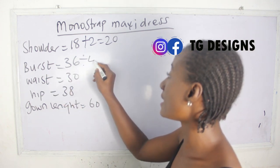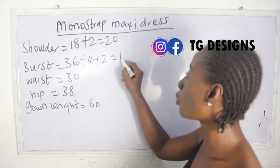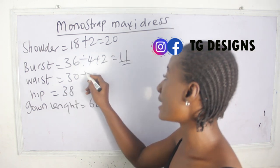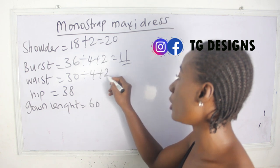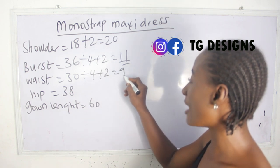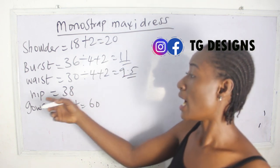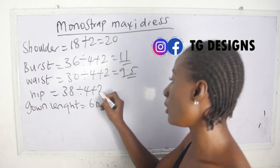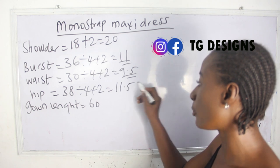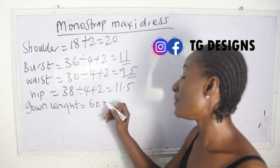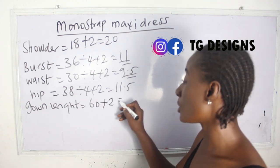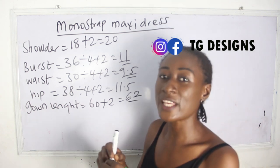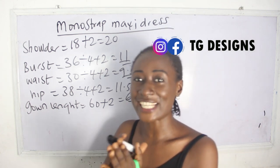Our waist is 30; 30 divided by 4 plus 2 gives us 9.5 inches. Our hip is 38; 38 divided by 4 plus 2 gives us 11.5 inches. Our gown length is 60 plus 2 inches, giving us 62 inches. These are the basic measurements required to achieve this style.